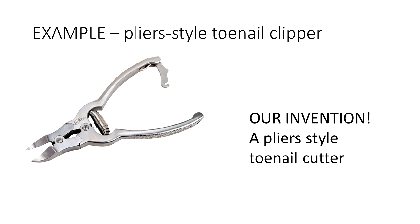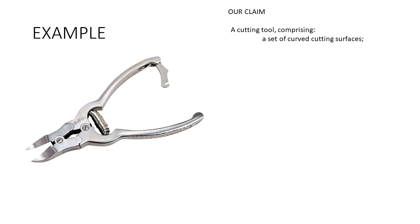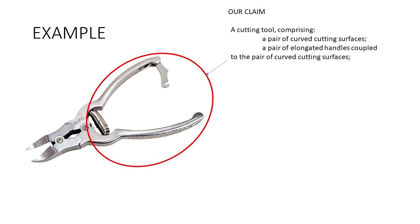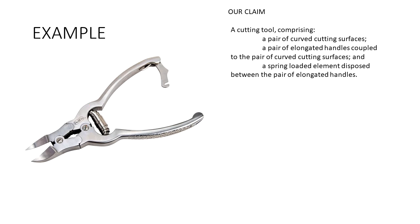We invented this plier-style toenail clipper. Now let's write our independent — which means broadest or most general — claim to cover our invention. We have a set of curved cutting surfaces, shown here in the red circle, elongated handles coupled to the cutting surfaces, and a spring-loaded element which assists us in the clipping action during use.